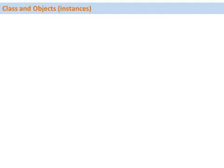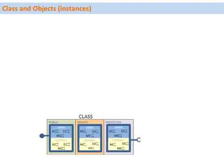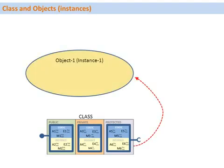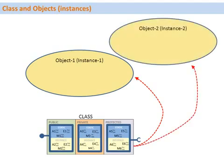Let's have a look at how we can create several objects from a class. We have a class here with a public section, protected section, and private section. We also have static components and instance components. In the programming code we can use the statement CREATE OBJECT to create several instances from this class. Each instance is called an object, so we have object 1, object 2, and so on.